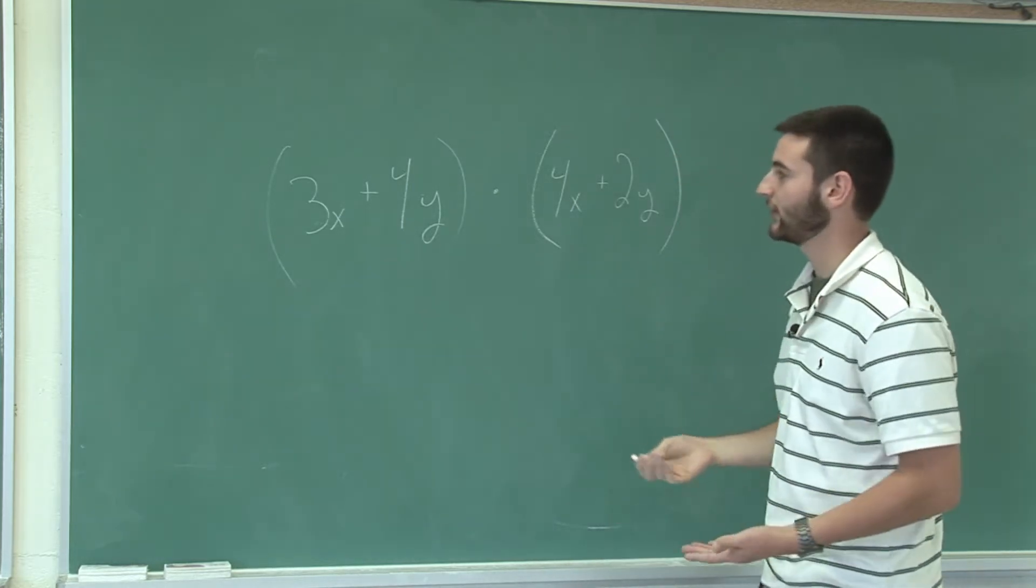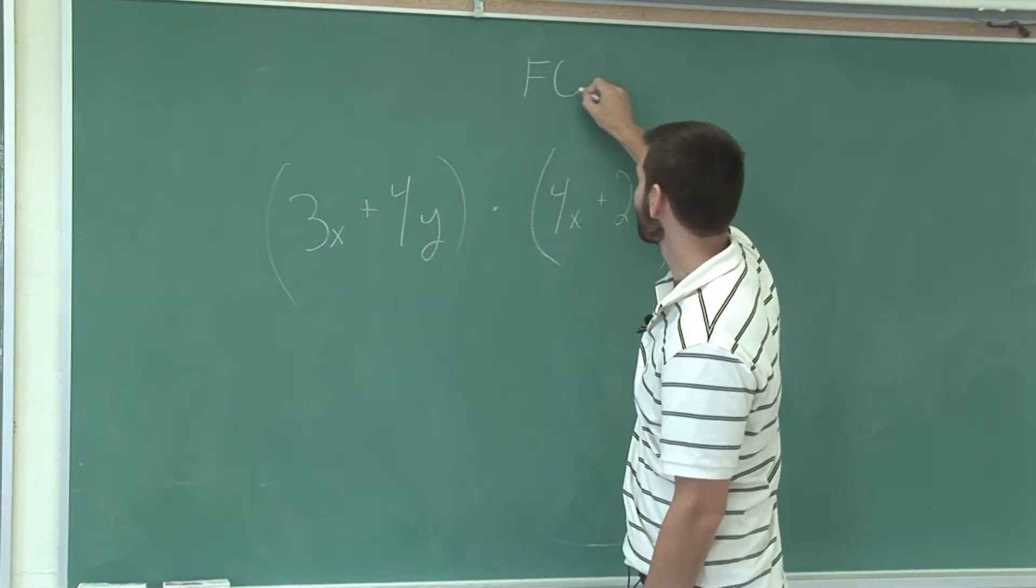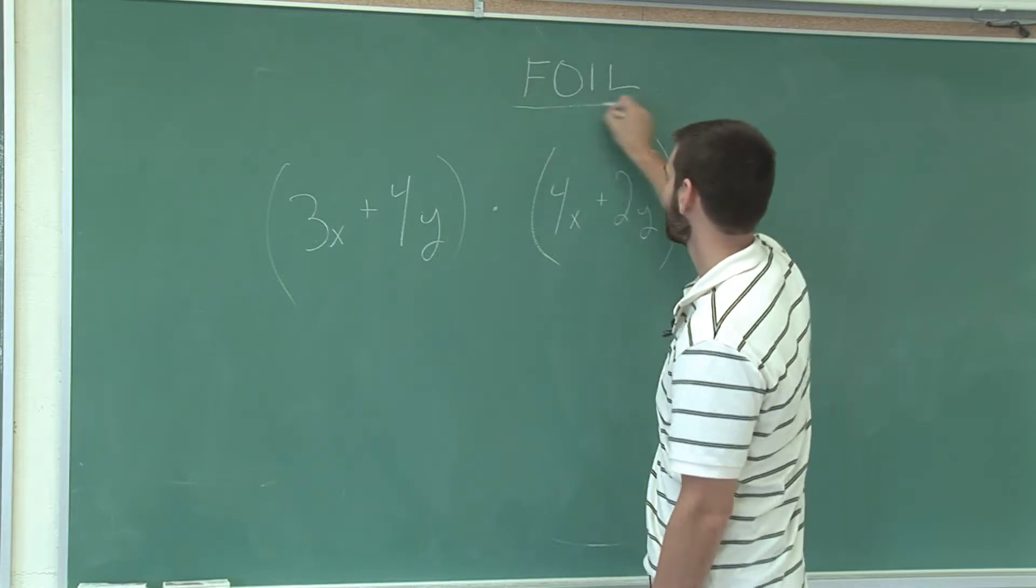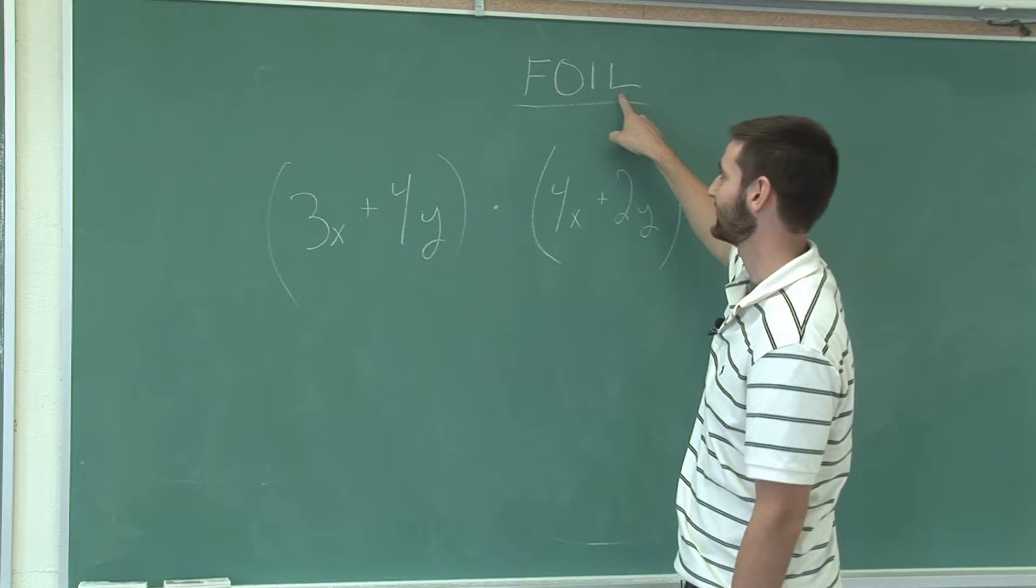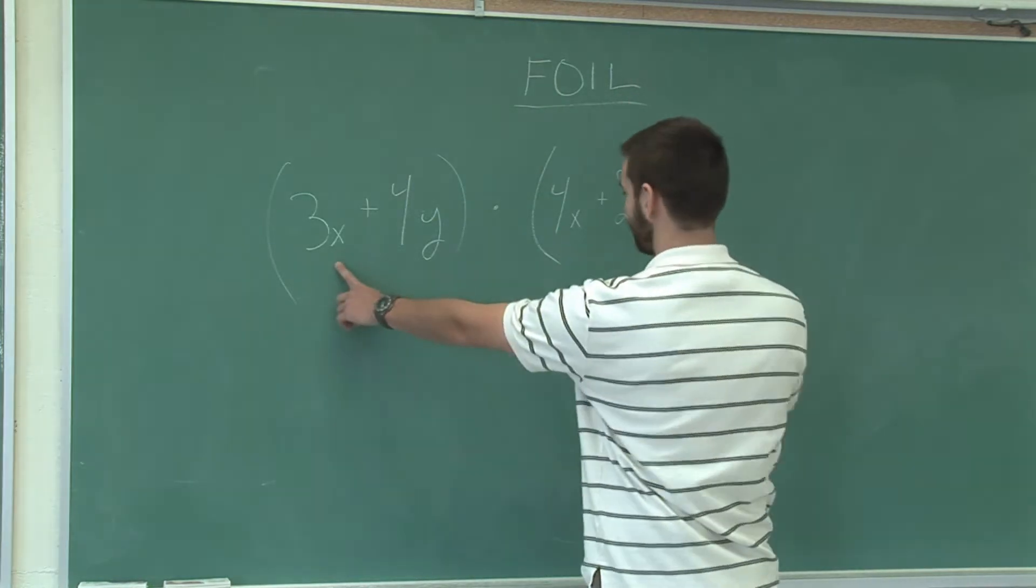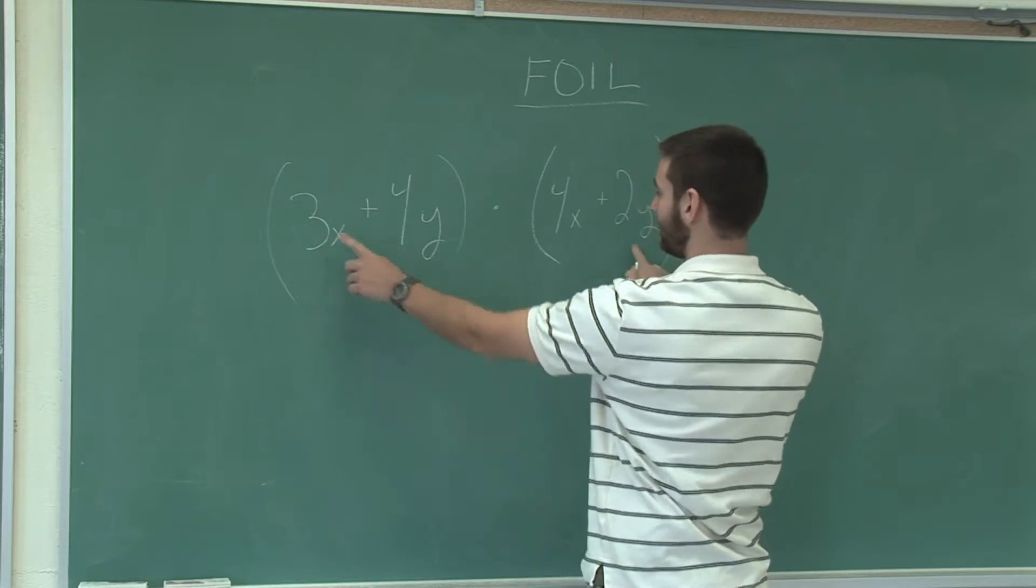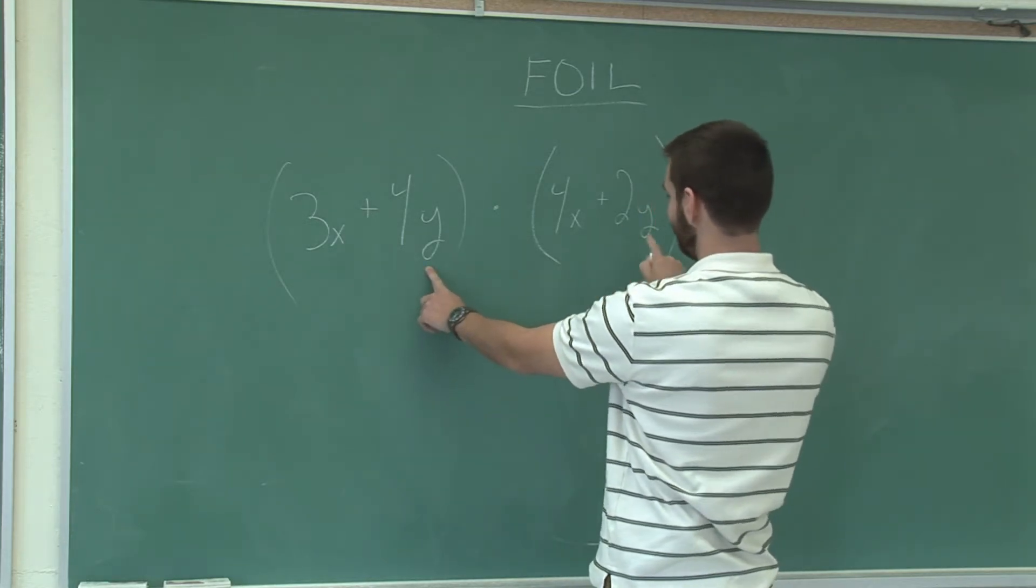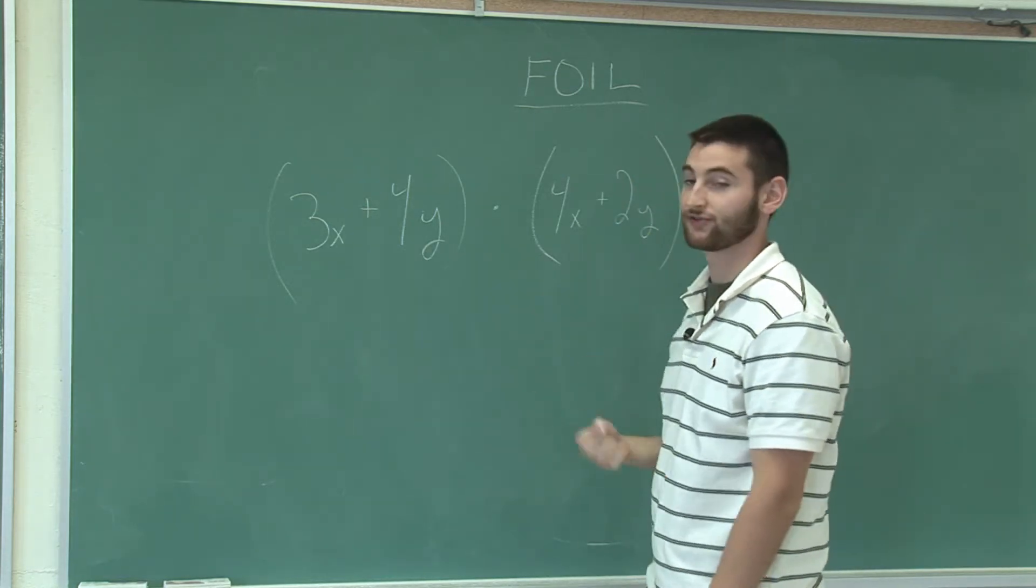Now to multiply, we're going to use a method called FOIL. FOIL stands for First Outer Inner Last. The first represents the first term here and here, outer here and here, inner here and here, and last here and here. That's just a way to remember how to perform multiplication of polynomials.